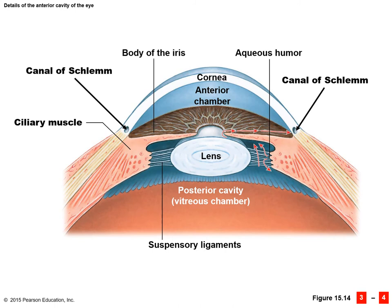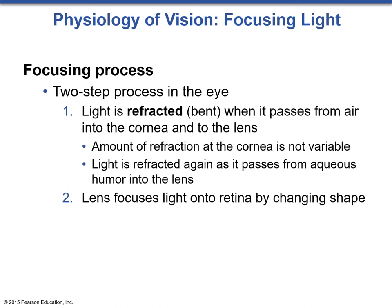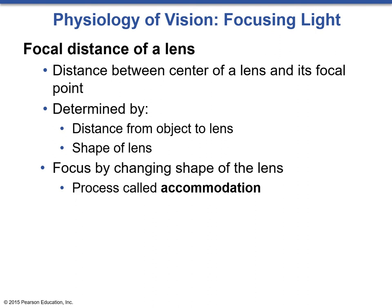Now we'll talk about the actual physiology of vision — specifically how we focus light and how we see. Focusing light is a two-step process. First, light is refracted, which means it's bent, as it passes from air into the cornea and then into the lens. This works the same way that light is bent via a prism and separated into different wavelengths — in nature this causes a rainbow. The amount of bending at the cornea is constant and not variable. Light is refracted again as it passes from the aqueous humor into the lens, and is then focused onto the retina by the lens changing shape.